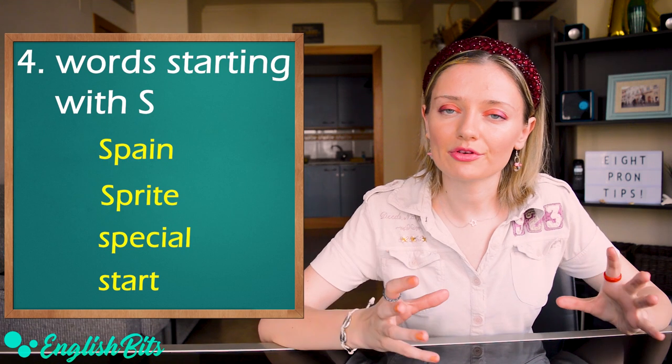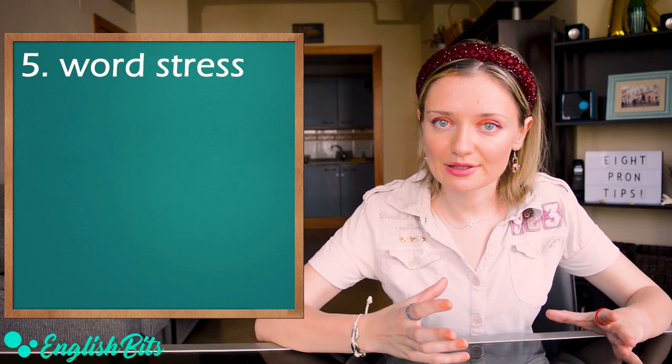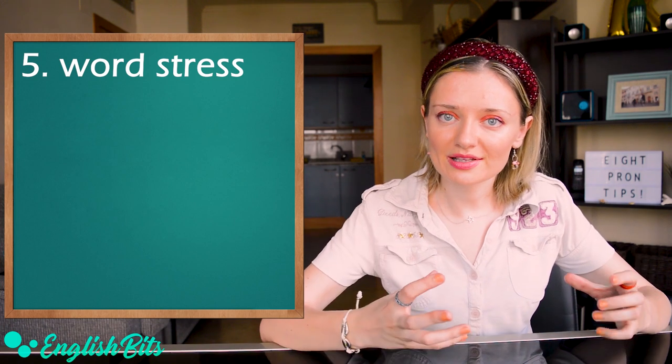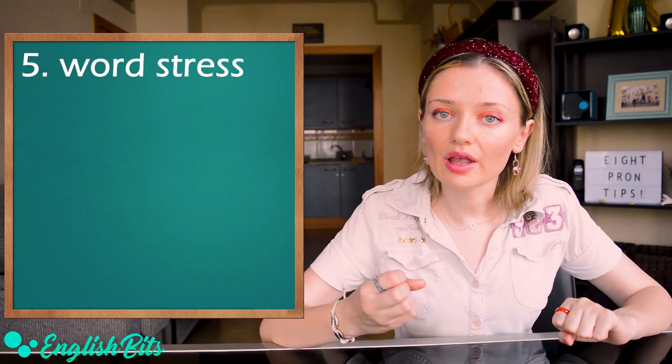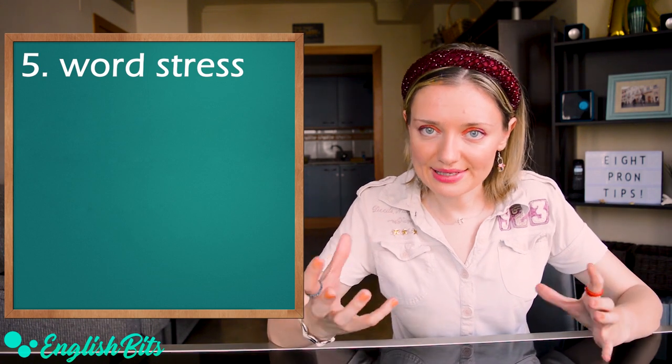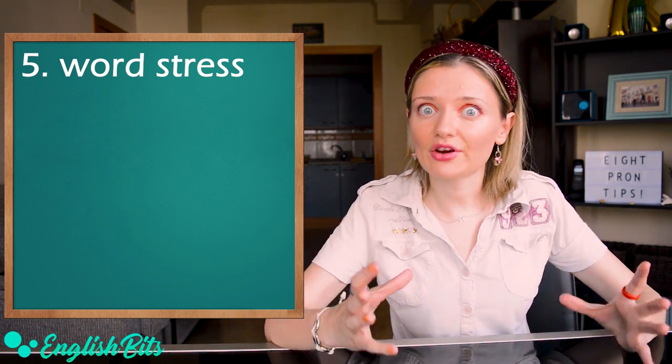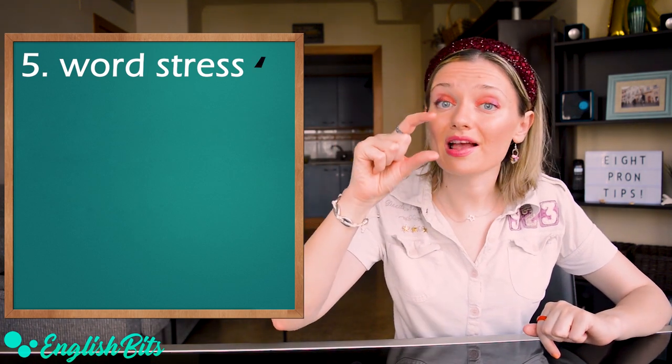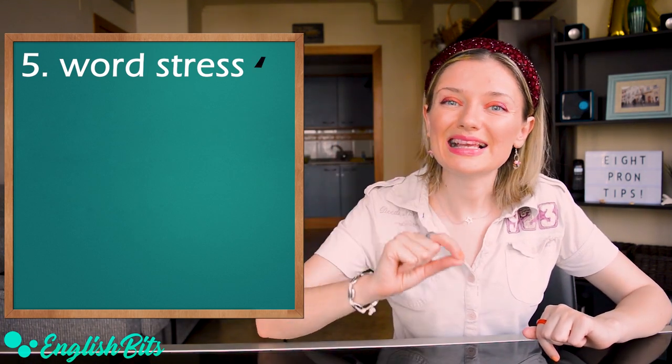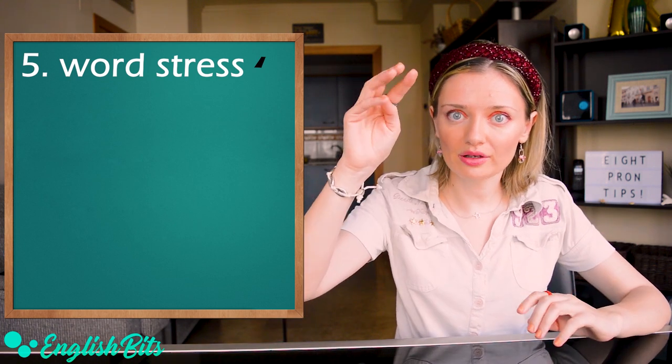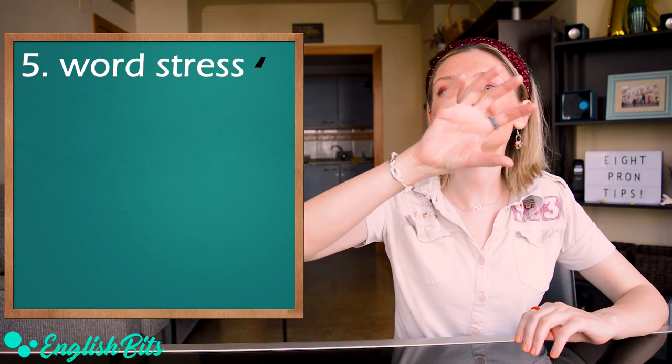My tip number five is word stress. It means that it's important to stress the correct syllable in the word. How can you know which syllable is stressed? It's very simple. The apostrophe tells you that the next syllable is stressed. So whenever you see an apostrophe, the stress goes after it.